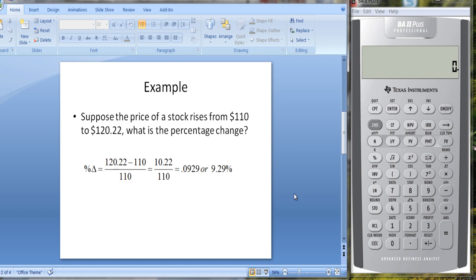Using the formula, $120.22 minus $110 divided by $110 gives us 0.0929 or 9.29%. We could also have used the formula where we take $120.22